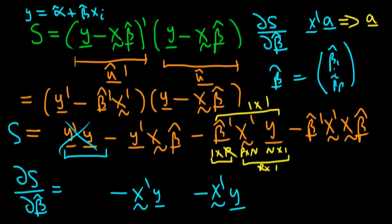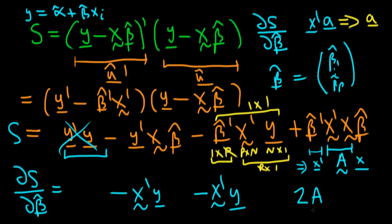Now for the most complicated-looking final term — actually it's the simplest to handle because it's already in quadratic form, where the matrix A is just X prime X. Beta hat transpose plays the role of X prime in our notation, and beta hat plays the role of X. Note this term carries a plus sign because we have minus times minus from both parentheses. Differentiating a quadratic form X prime A X gives 2AX, so here we get plus 2 times X prime X times beta hat.